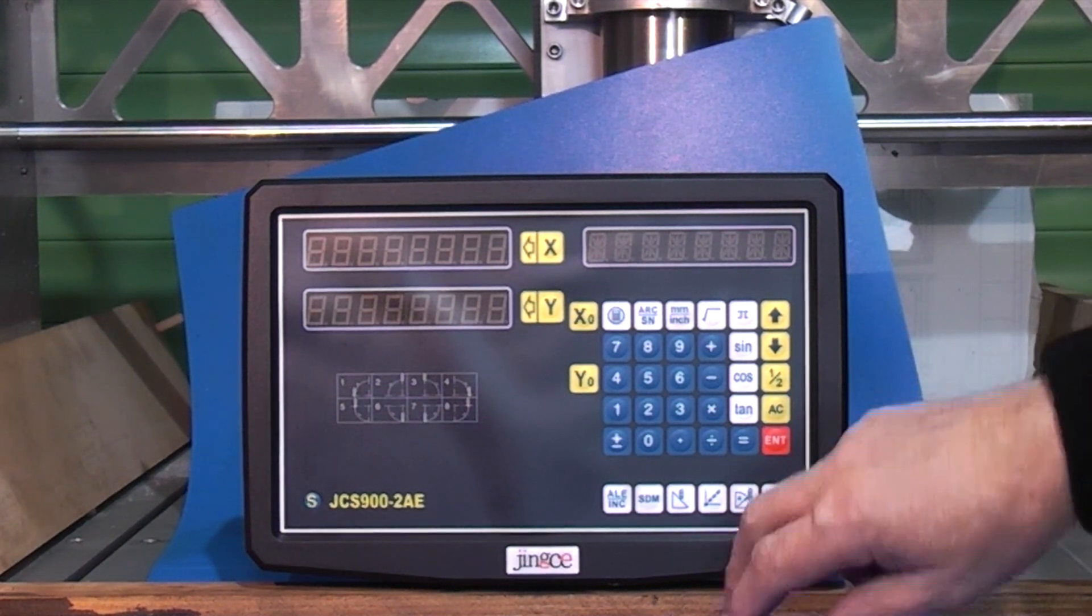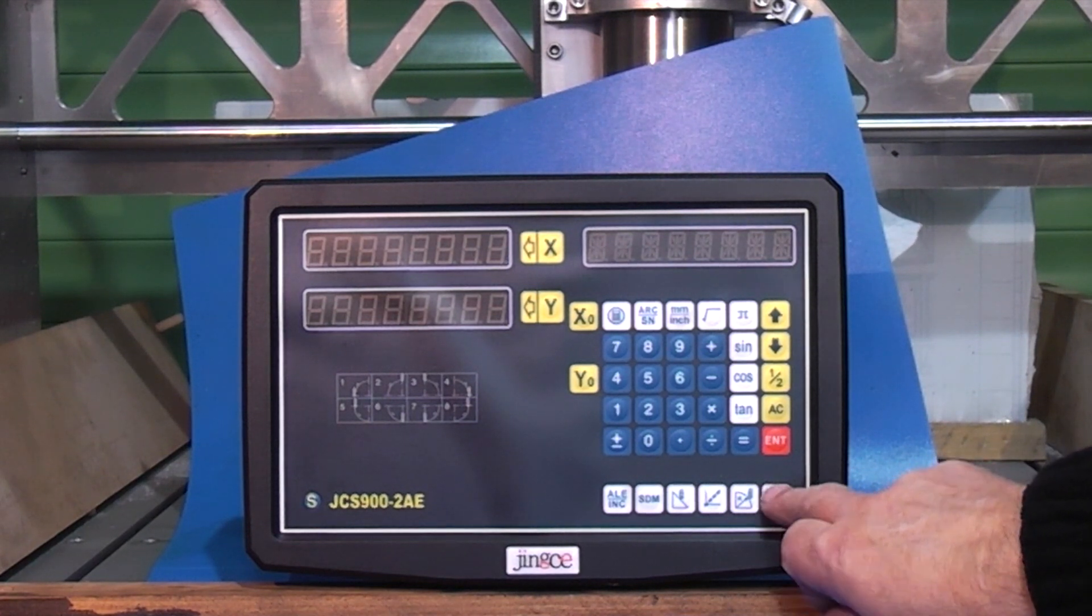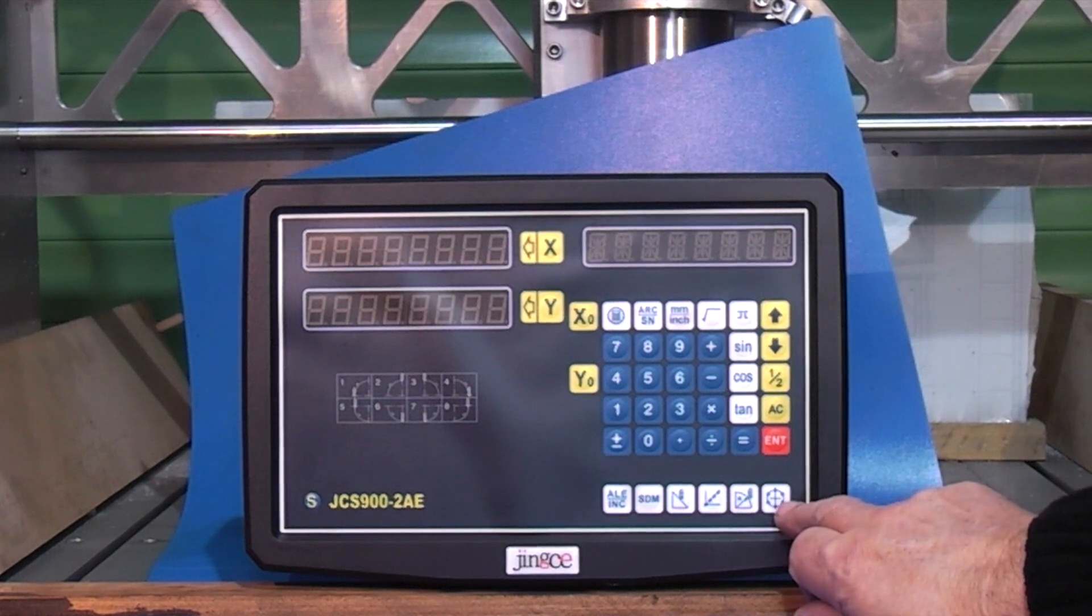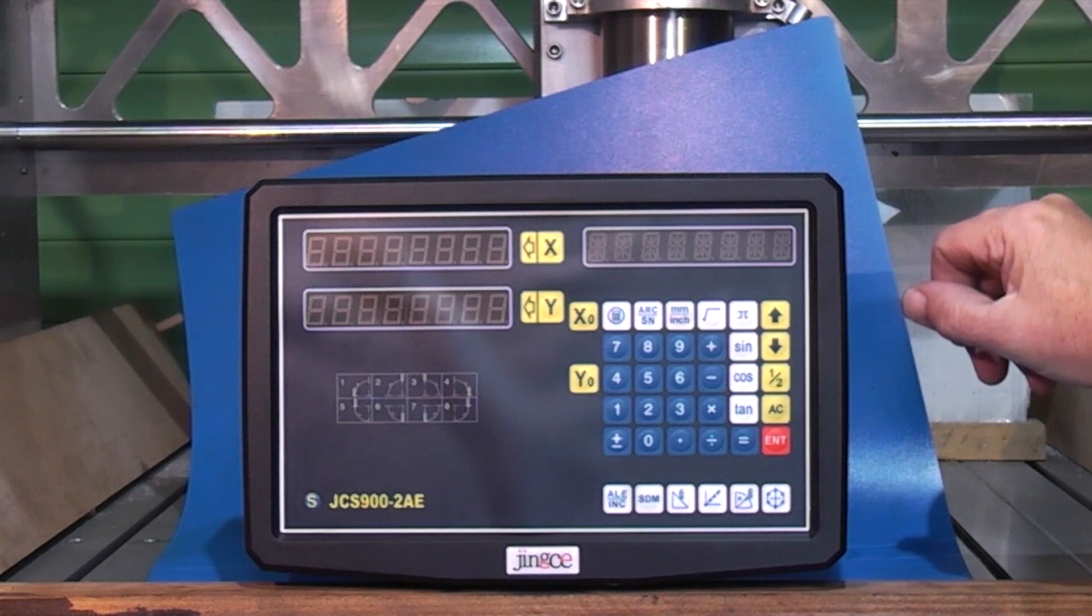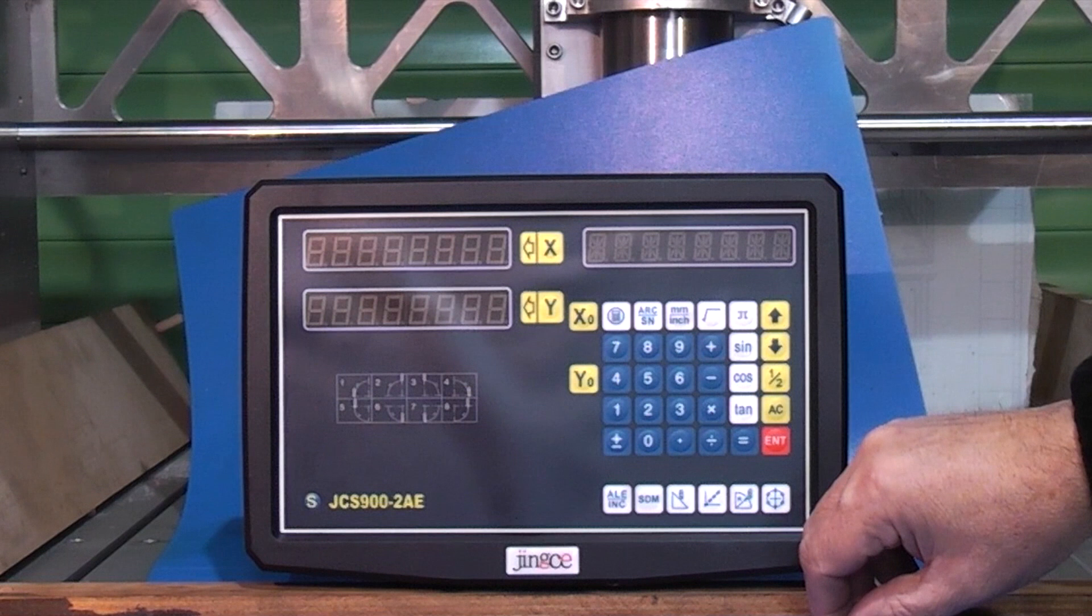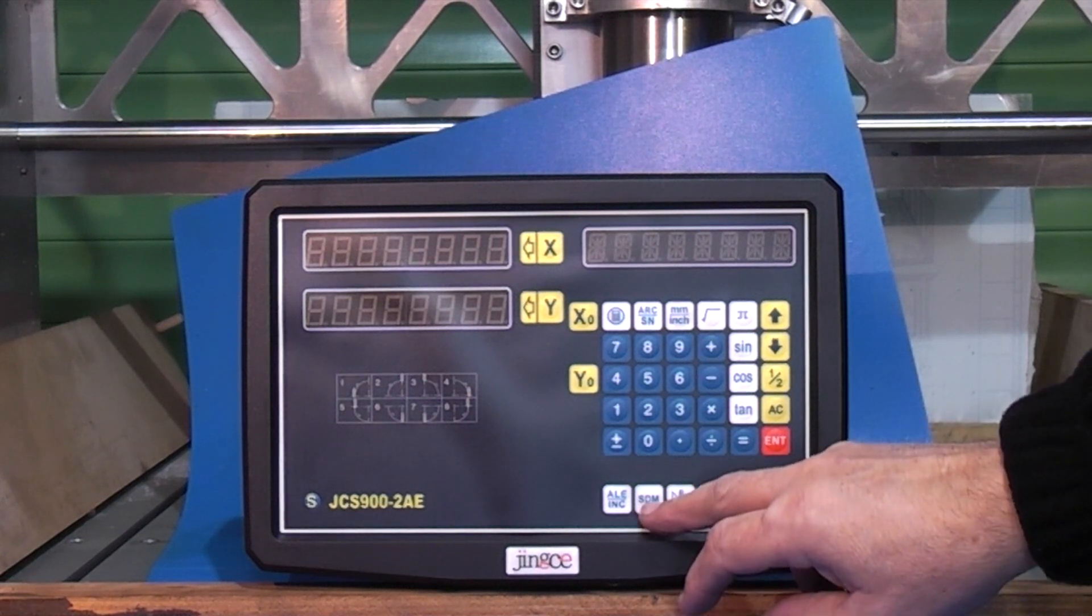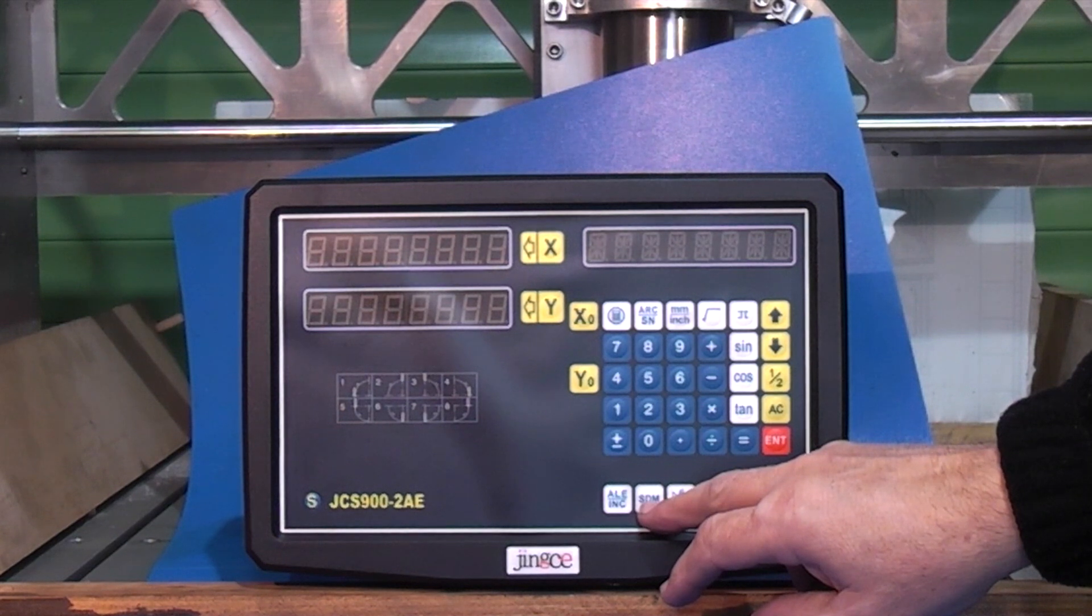You have an enter key, a cancel key, and down the bottom here you have programs for drilling holes on pitch circles and the key to change from absolute to relative position on the readouts. And SDM is for subdatum. You can store up to 200 subdatums and when the power is switched off it will remember those positions.